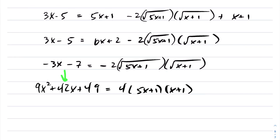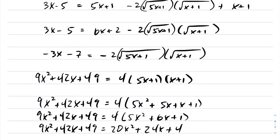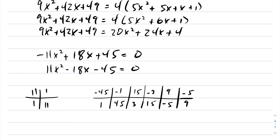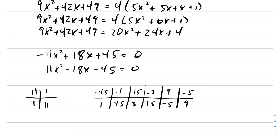After squaring both sides again, we get 9x squared plus 42x plus 49 on one side. Distributing and bringing everything to one side, we expand the product of the binomials and simplify. With two quadratics equating each other, we bring everything to one side and get negative 11x squared plus 18x plus 45 equals 0. Multiplying across by negative 1, I'm going to solve this using charting — you can use decomposition as well, but with the large a and c values, charting is a little easier.